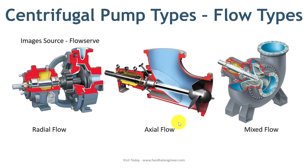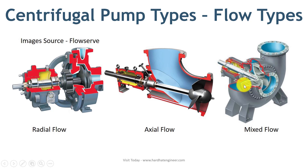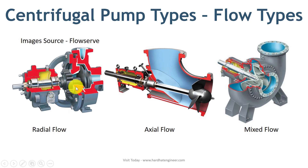As the name suggests, when the fluid flow is a mix of both radial and axial, it is called a mixed flow pump. It is a trade-off between radial and axial type pumps and can handle a high flow rate with a decent increase in pressure head.